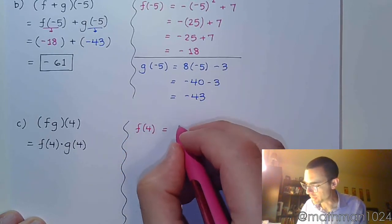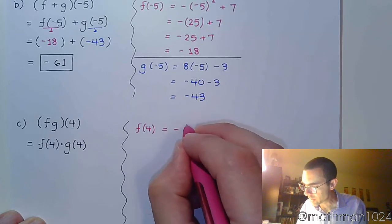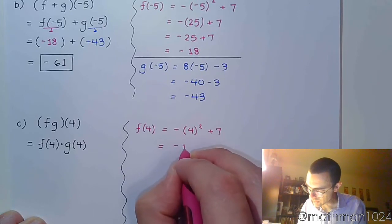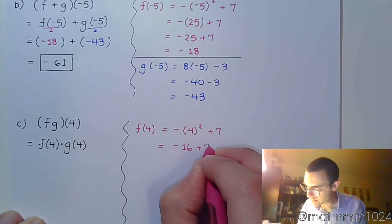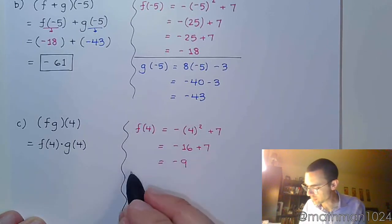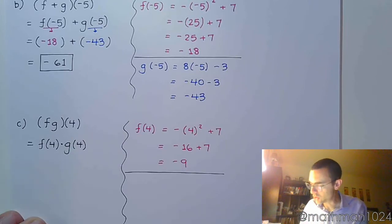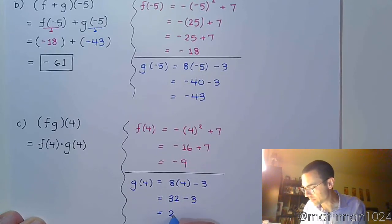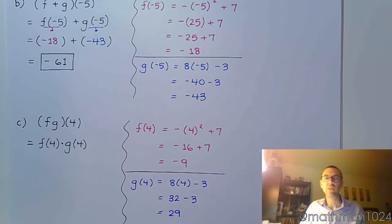So, f of 4 is equal to, going back to the beginning, negative 4 squared plus 7. So, that's negative 16 plus 7, which equals negative 9. And then do g of 4, using the same function g at the top of the page. g of 4 is going to be 8 times 4 minus 3. So, 32 minus 3, and that equals 29.